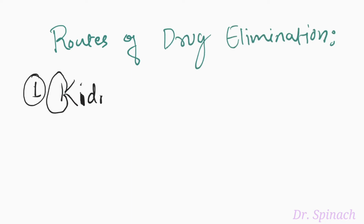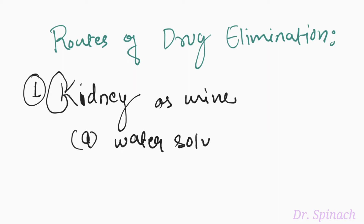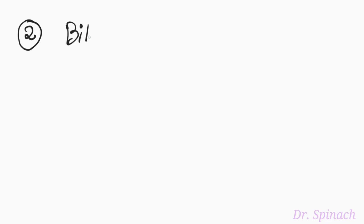The first and most important route is via kidney as urine. There are some prerequisites for the drug to be excreted via kidney — the drug should be (a) water soluble and (b) polar. If you remember my previous tutorial on metabolism, I mentioned that our liver modifies the drug into a metabolite which is both water soluble and polar so that it can be easily excreted out of the body via urine.